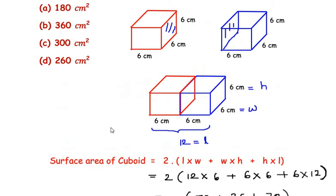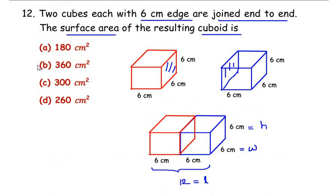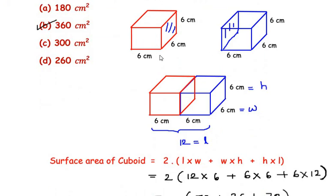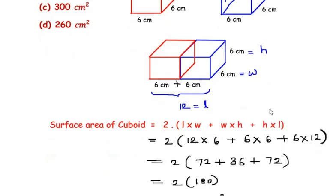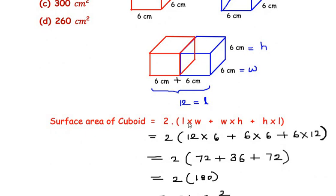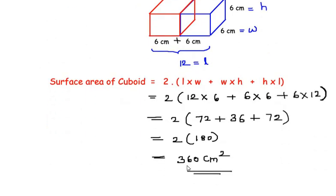Let us see if it is in the options. It is option B. To find the surface area of the cuboid, we join the two cubes together end to end. The length is the addition of the cube lengths, that is 6 plus 6 equals 12. The width is 6 and height is 6. Then we use the formula for surface area of cuboid to get its value.